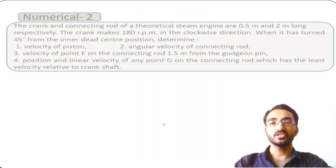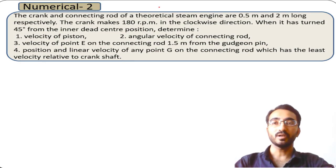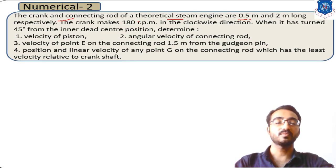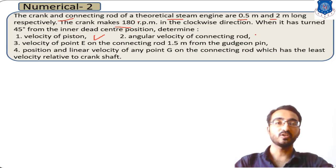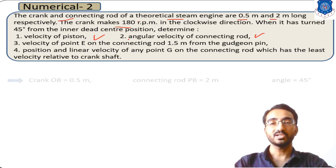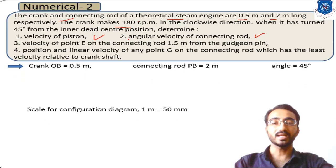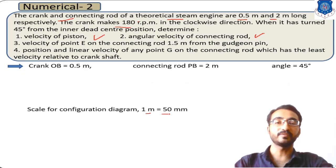In the previous session we learned that for a crank and connecting rod mechanism having dimensions of 0.5 meter and 2 meter long crank and connecting rod, with crank rotation of 180 rpm, we calculated the velocity of the piston and angular velocity of the connecting rod. To obtain these values we first sketched the configuration diagram, considering a length scale of 1 meter equal to 50 mm in drawing length.